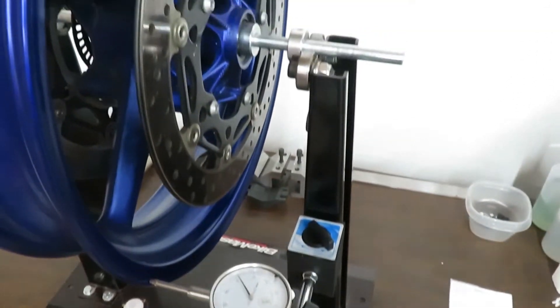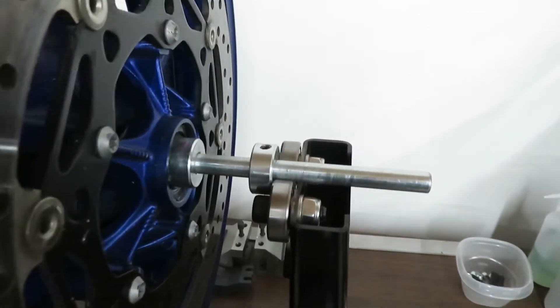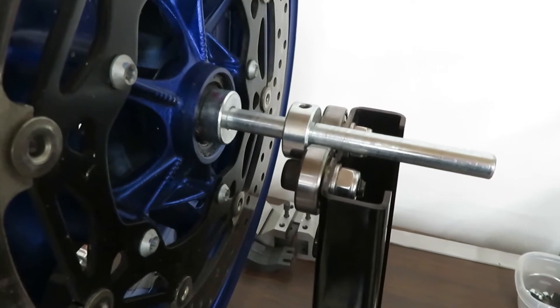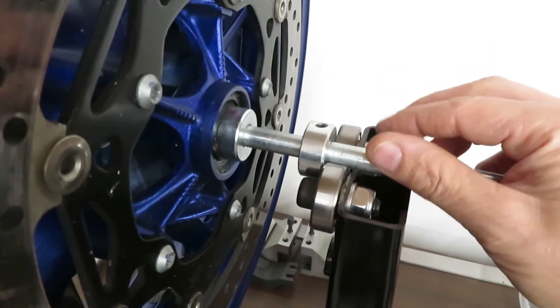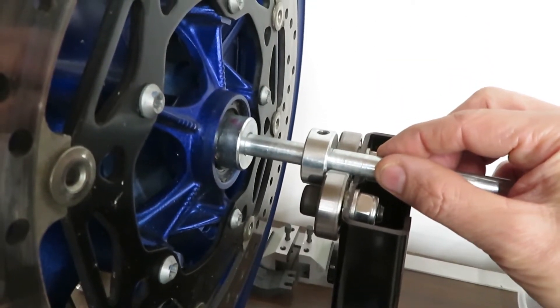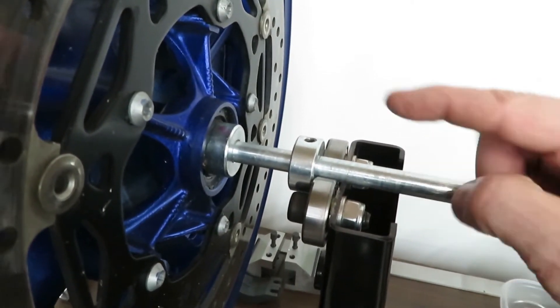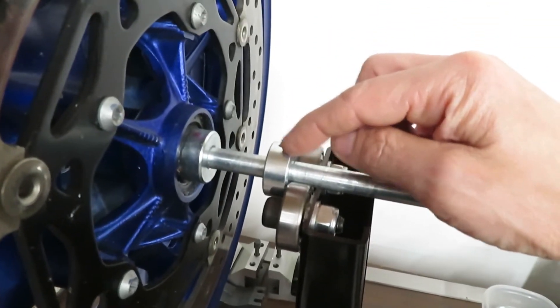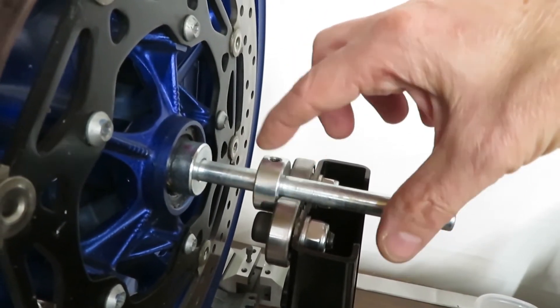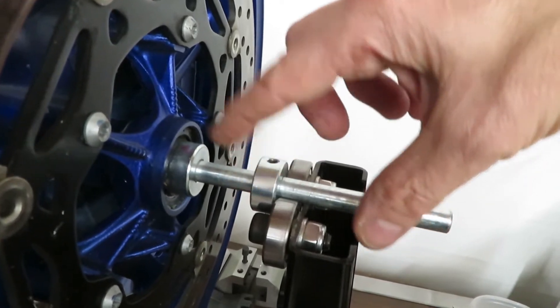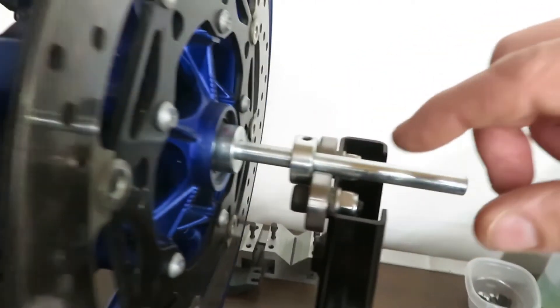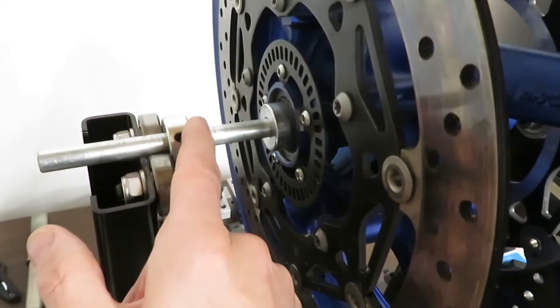And the key is having the wheel set up on the balancing stand such that this part of the balancing stand, the shaft that the wheel rotates on, can't move this way and that way. So you can use one of the collars to press it up against the bearing here. Not too hard, but enough so that the wheel won't move back and forth on both sides of the wheel.